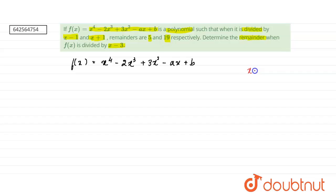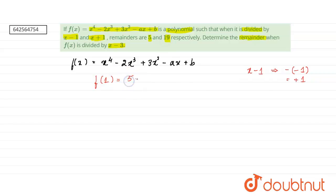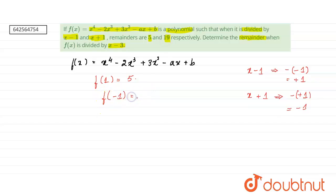For (x minus 1), the element is plus 1, so f(1) gives us the remainder of 5. Similarly, for (x plus 1), the element is minus 1, so f(minus 1) gives the remainder 19.